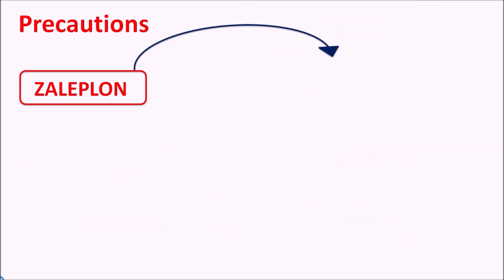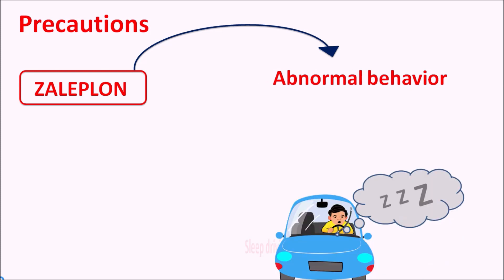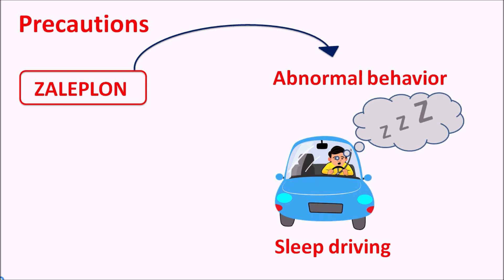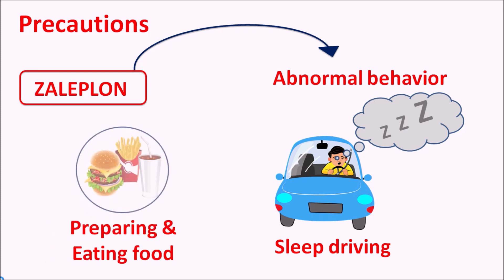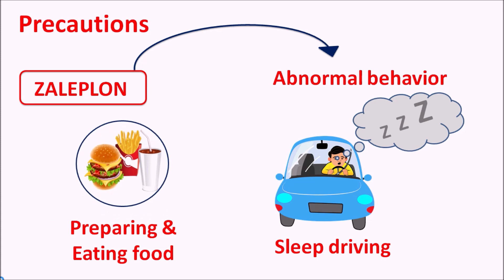Similarly, this drug can produce some abnormal behavior in patients. It can produce hallucinations and even sleep driving, which is very important, as well as other strange behavior such as preparing and eating food, sleepwalking, or making phone calls without any intention. All these types of strange behavior can be observed with Zaleplon and should be closely monitored.